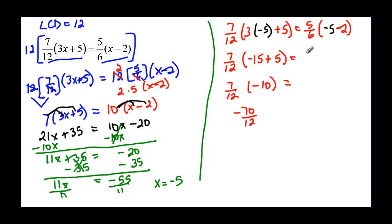Let's see what happens over here. So I have 5 over 6, and negative 5 minus 2 is going to be negative 7. So when I multiply, I am going to have negative 35 over 6.